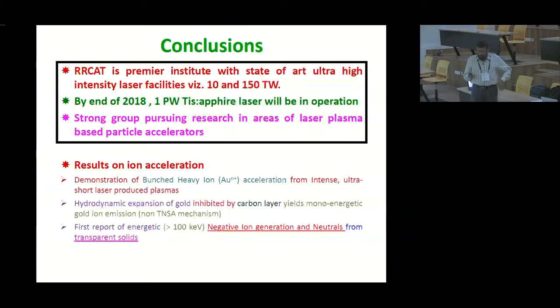So finally I will conclude that RRCAT is a premier institute with the state of art ultra high intensity laser facilities and soon we will have petawatt laser facility which will be in operation by end of 2018. We got a strong group pursuing research in areas of laser plasma based particle accelerators and here I will just mention briefly our important results: demonstration of bunched heavy ion acceleration in laser plasma interaction, then hydrodynamic expansion of gold. They are basically hydrodynamics of gold expansion inhibited by carbon layer yielding monoenergetic gold ion emission and first report of energetic 100 keV negative ion from plasma.